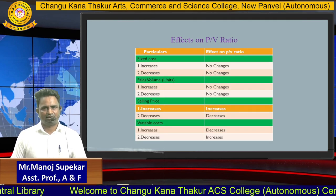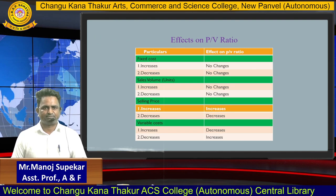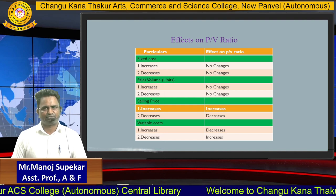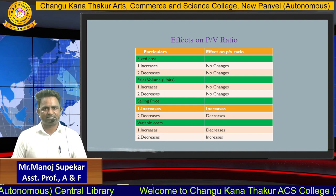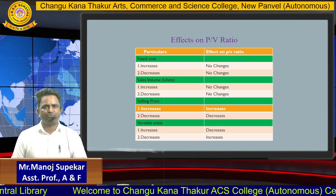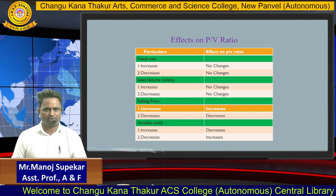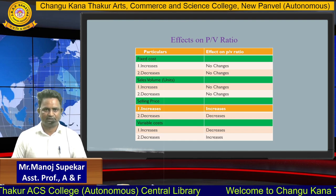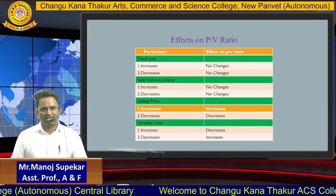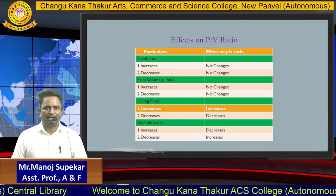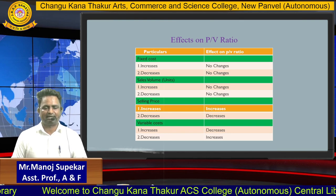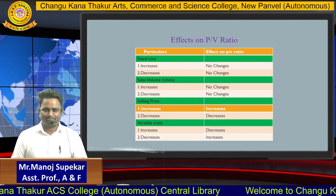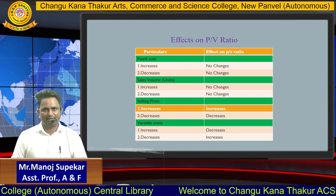What is the exact effect on PV ratio from various factors? For fixed cost — if fixed cost increases or decreases, there is no effect on PV ratio. For sales volume — if sales volume increases or decreases, there is no effect on PV ratio. If selling price increases, then PV ratio will increase; if selling price decreases, then PV ratio will decrease. For variable cost it is the opposite: if variable cost increases, PV ratio will decrease; if variable cost decreases, PV ratio will increase. This is because if expenses increase, profit goes down, and if expenses go down, profit increases.